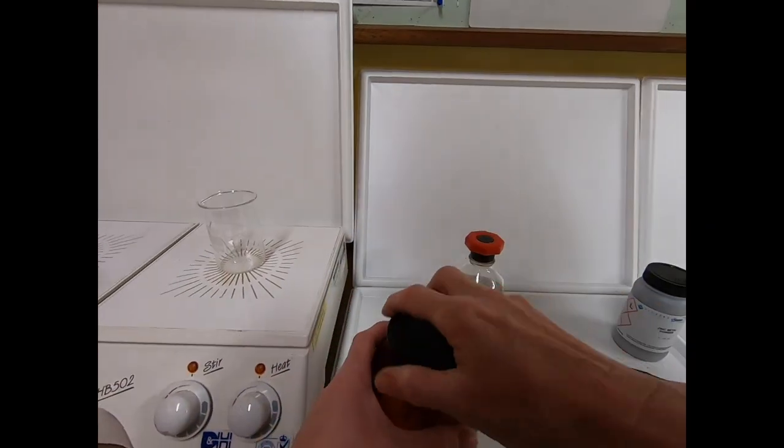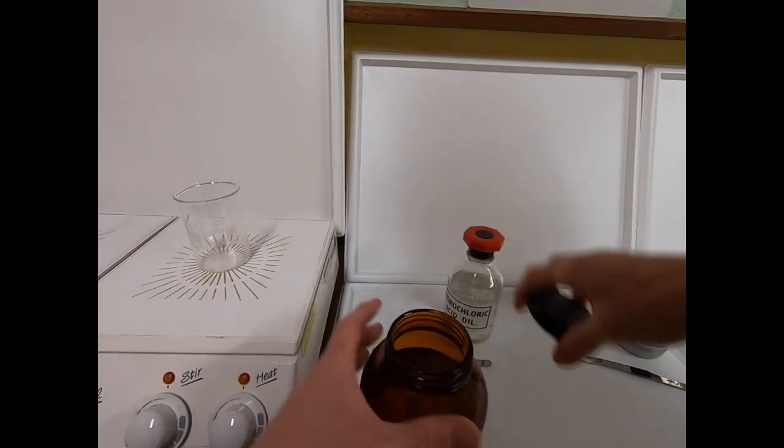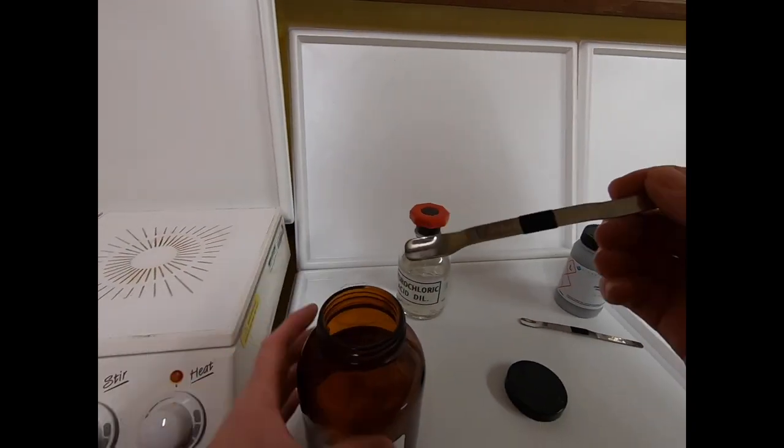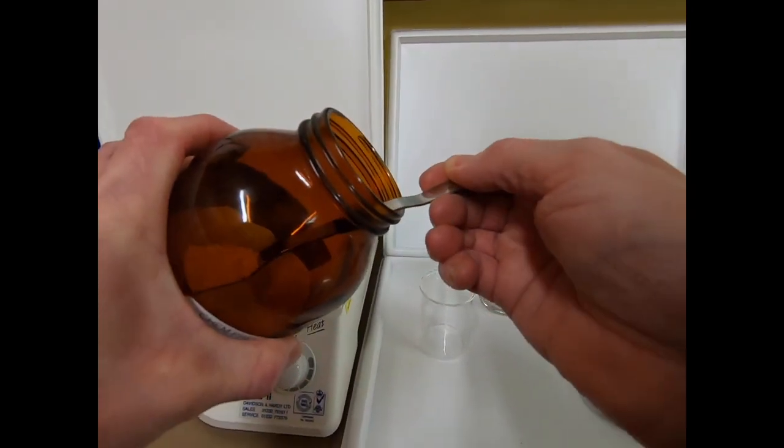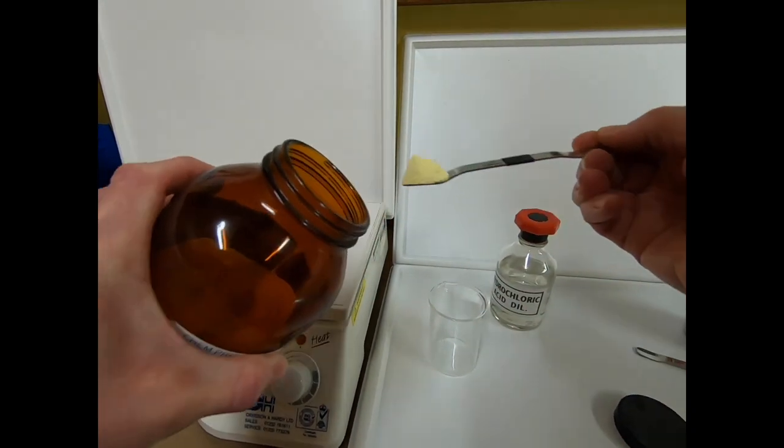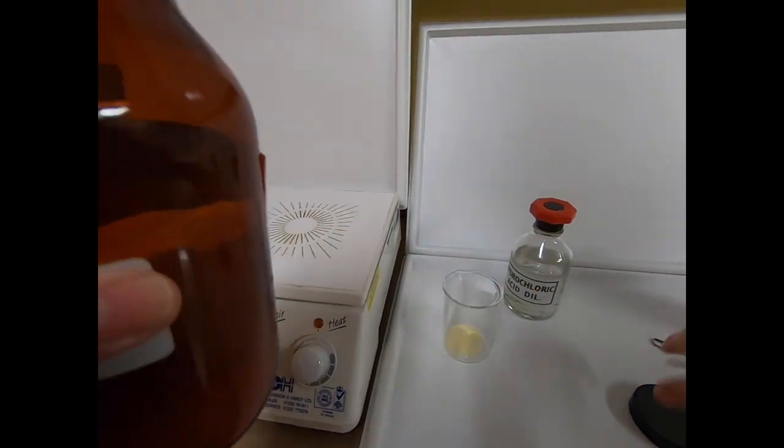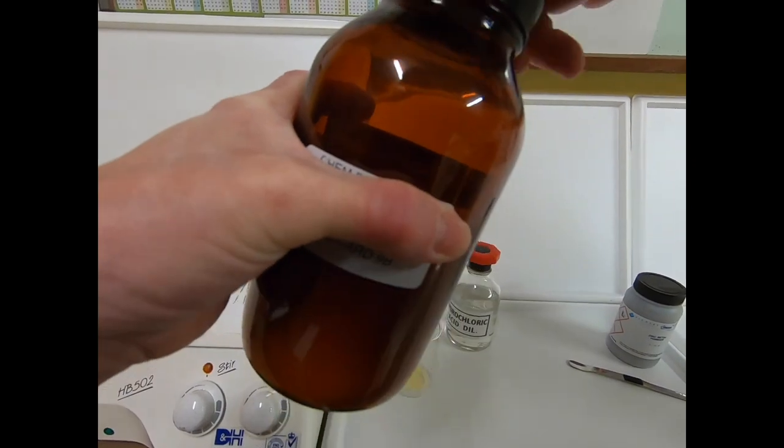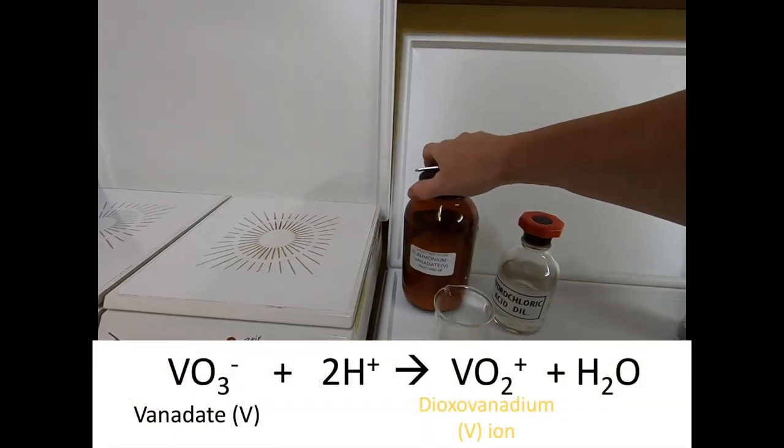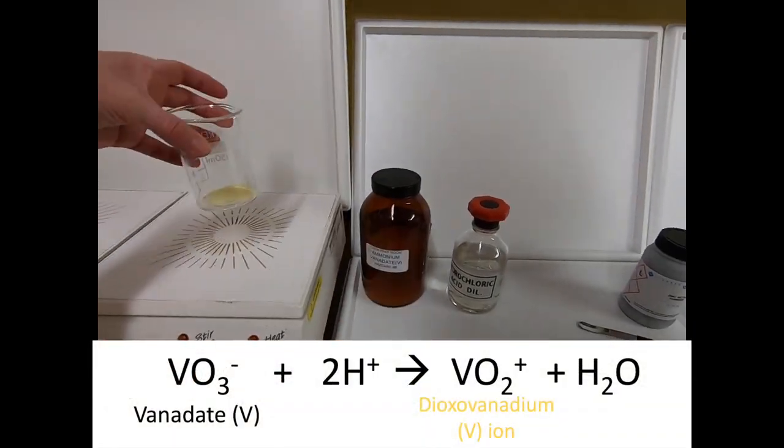In this video we're going to carry out the reduction of acidified ammonium vanadate(V) with zinc and observe the sequence of colors that we see. First, the ammonium vanadate(V) is acidified using hydrochloric acid. This converts the vanadate(V) ions into dioxo vanadium(V) ions.